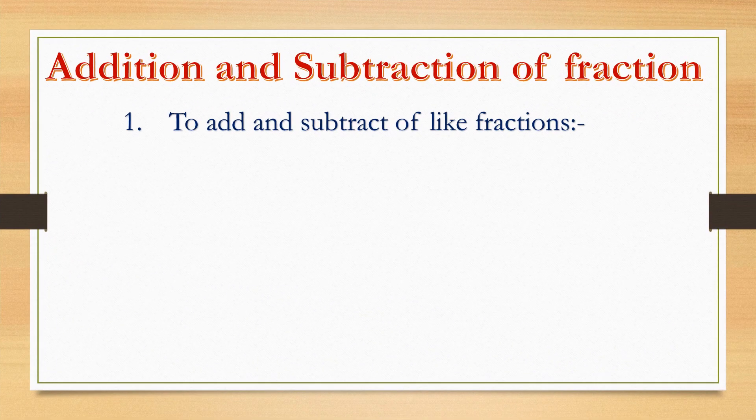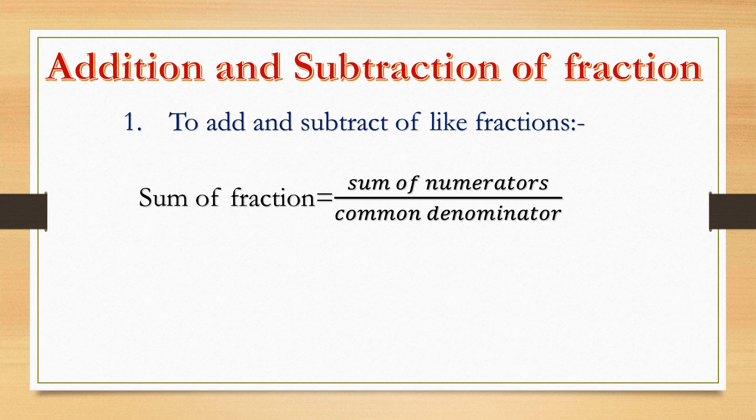Now, addition and subtraction of fractions. This topic you have already done in fourth standard. There are two types while solving: number one — to add and subtract like fractions. Since like fractions have the same denominator, this is very simple. The sum of fractions equals the sum of numerators divided by the common denominator — you write the denominator only once since it is the same.